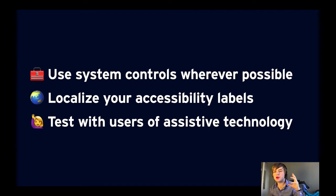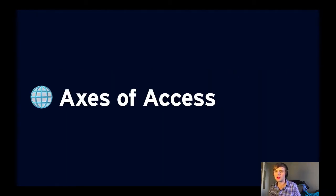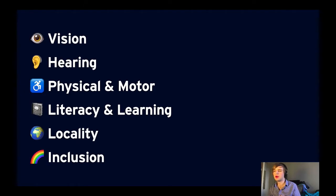The final step after auditing, filing bugs, and fixing them is to start testing with real users of assistive technology. It's all well and good to test things yourself and you should do that first, but you can't really know if you've improved your app's accessibility unless you've tested it with real users. There are multiple axes of access to cover to make a truly universal design: vision, hearing, physical and motor, literacy and learning, locality, and inclusion.